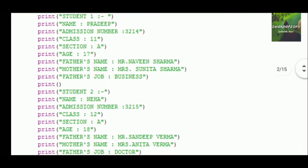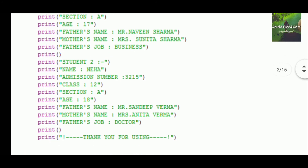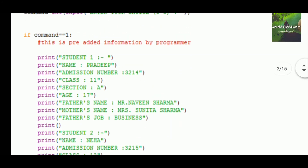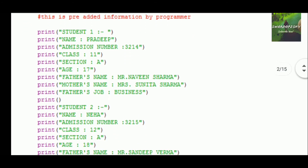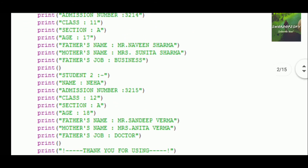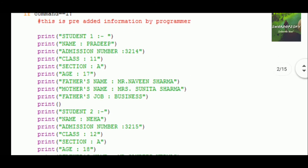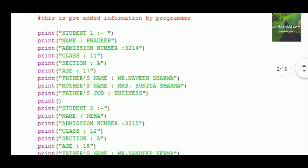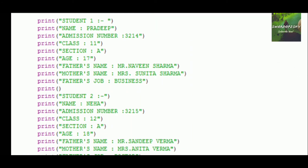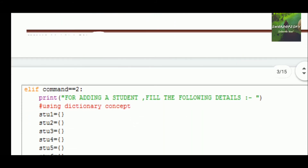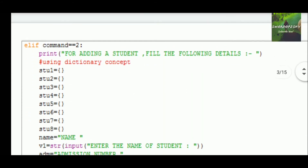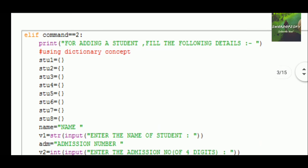If command 1 is chosen, all the data which is already saved or fixed for a user will be shown. This data is already available. This can be improved by using a CSV file or SQL database so that the number of lines is reduced, and in fewer lines you can create a more impactful and customized program. That was the first command.